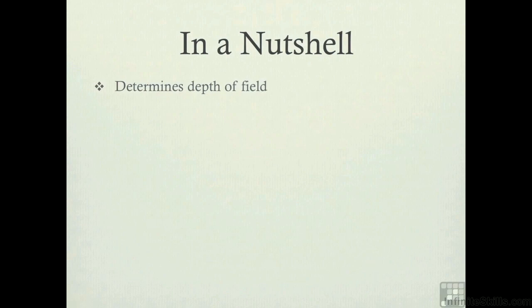F-stops are on a ring on the lens, and they usually come in traditional f-stops like this, from 1.4 to 2.8, 4, all the way to 22.